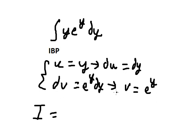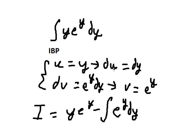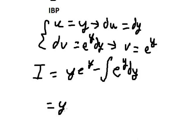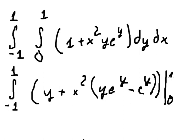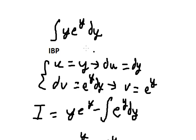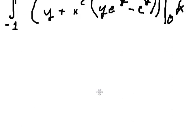So we have u multiplied by v, minus the integral of e to the power of y dy, which is u multiplied by v. The integral of this gives us y times e to the power of y minus e to the power of y. Now we put the bounds in here.